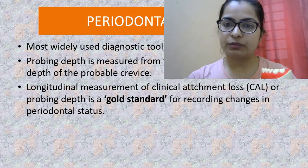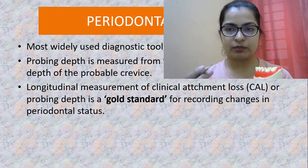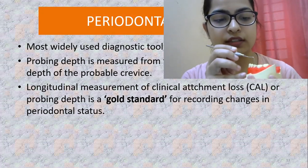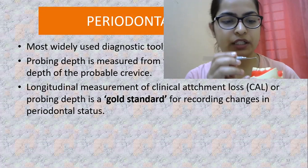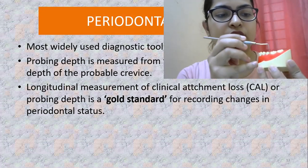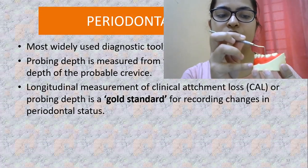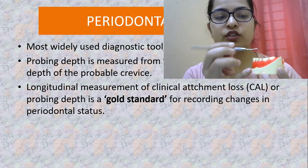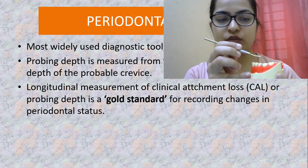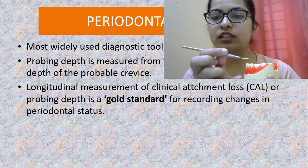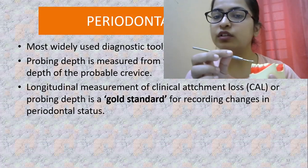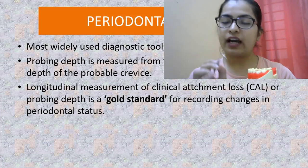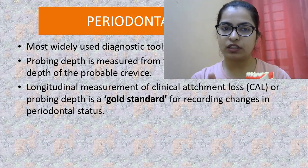There are two types of probing: walking the probe and running the probe. Walking the probe is mainly done to check the depth of the sulcus. The probe should always be used parallel to the tooth — never at an angulation — as going at an angle can cause the probe to land in the embrasure giving a wrong result. It should always be parallel to the long axis of the tooth. There are six surfaces to check: distobuccal, buccal, mesiobuccal, distolingual, lingual, and mesiolingual.